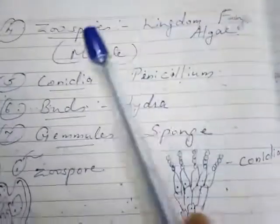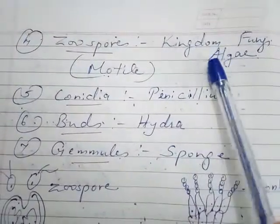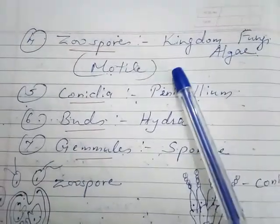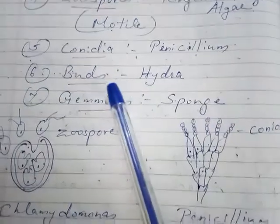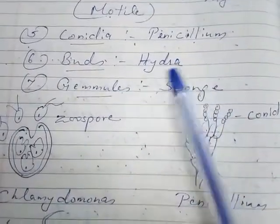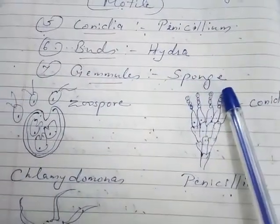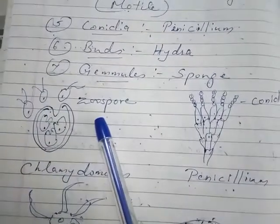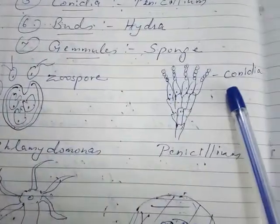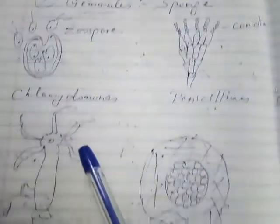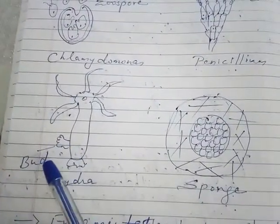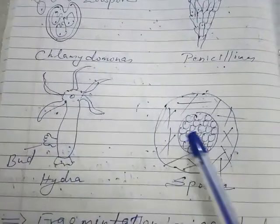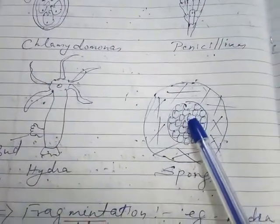Zoospores are seen in kingdom Fungi and Algae — they are motile. Conidia are seen in Penicillium, which is a fungus. Buds are seen in Hydra, and gemmules are seen in sponge. Hydra has a bud that detaches from it and grows into a new Hydra, and these are the gemmules in the case of sponge.